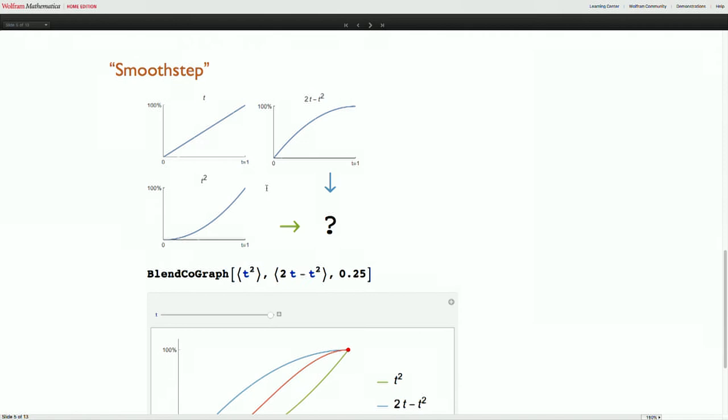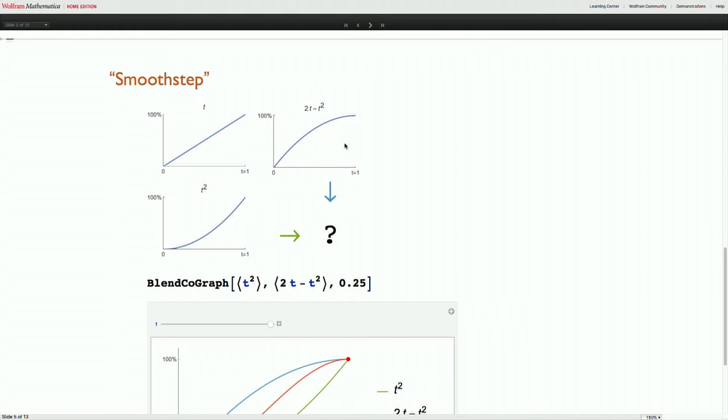And it ends constant like 1. And then we can ask, okay we've got this t squared and this inverse of t squared. Can we blend between these two? And we can.